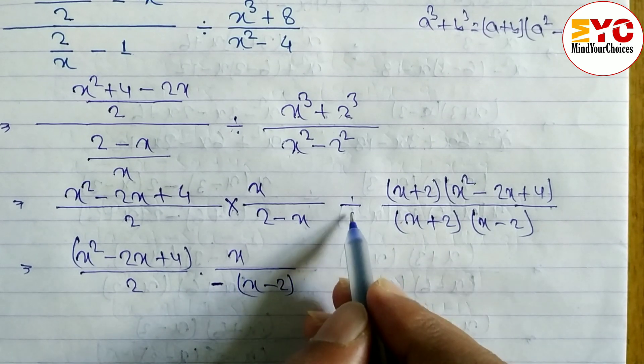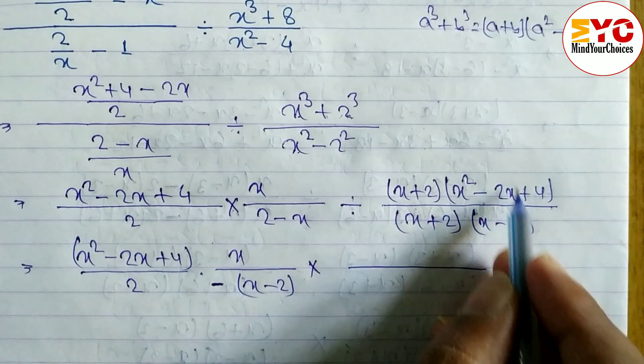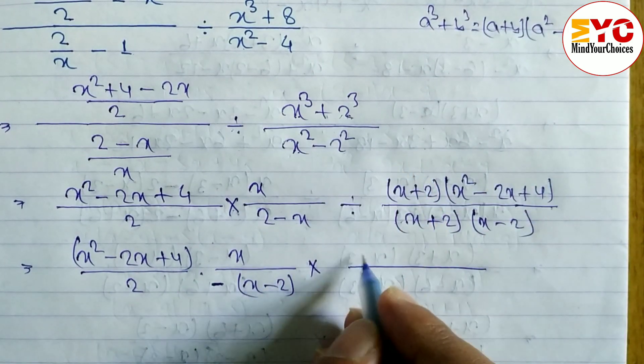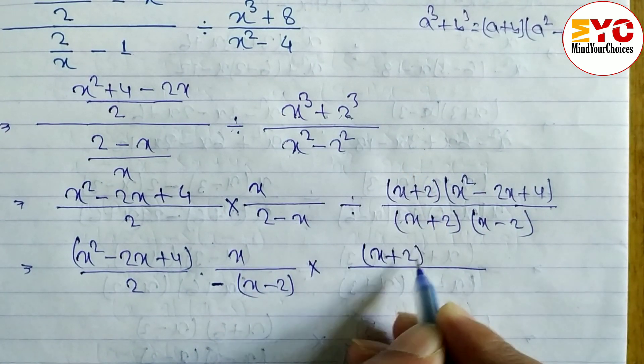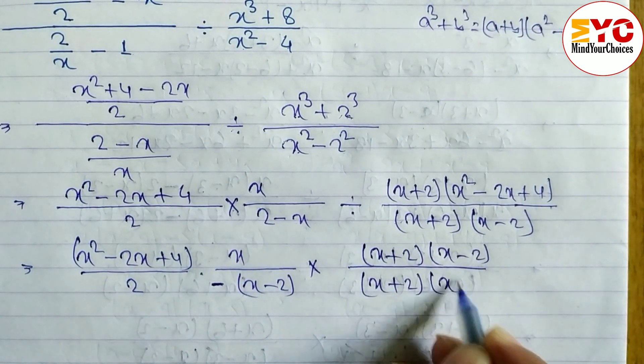So we have to take here minus common. Now in the place of division if we write multiplication, we have to find out the reciprocal of this term. So denominator we have to write in numerator and numerator in denominator. So we can write here x + 2, x - 2 in denominator, again here x + 2, x² - 2x + 4.